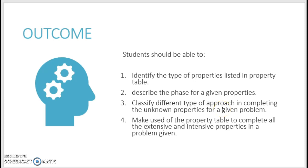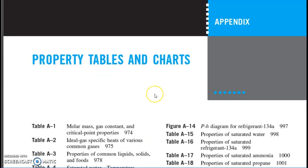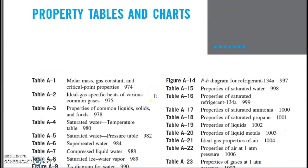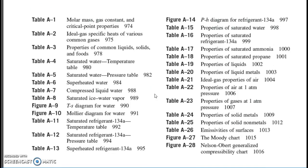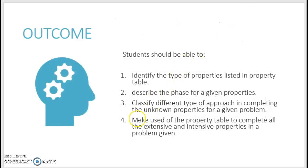This will depend on what type of table you are going to read. As you can see from your property table, the indices at the front of the table — you have table E5, E6, and E7. The outcome from this activity is this number 3: you need to be able to classify the different type of approach.